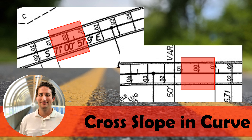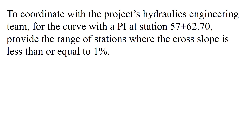In this example problem we're going to look for the cross slope in a horizontal curve at specific ranges of cross slope. In our problem statement we're told to coordinate with the project's hydraulics engineering team for the curve with a PI at station 57 plus 62.70. We need to provide the range of stations where the cross slope is less than or equal to 1%.